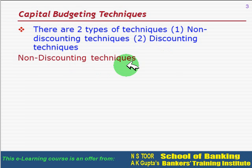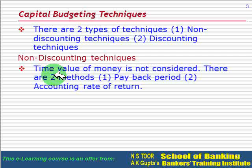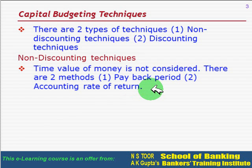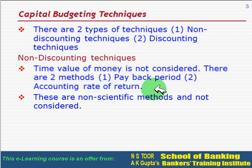Non-discounting techniques are of two types. In these techniques, time value of money is not considered. These techniques involve: number one, the payback period method, and number two, the accounting rate of return method. Remember, these are non-scientific methods and hence are not commonly used.